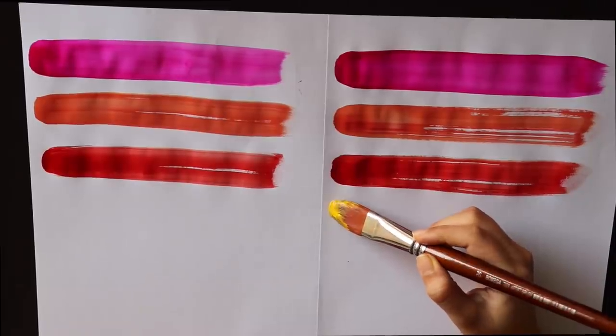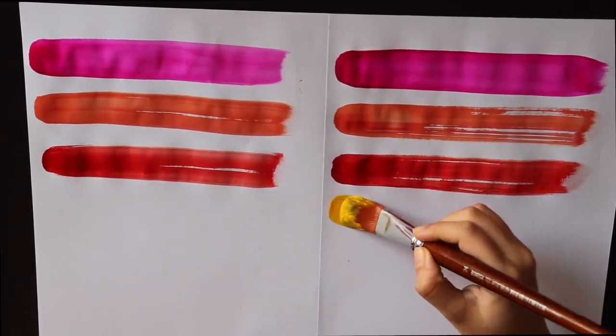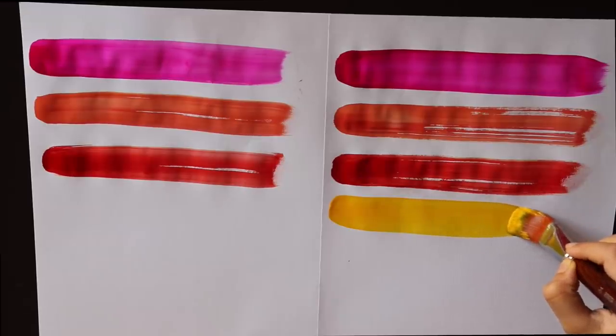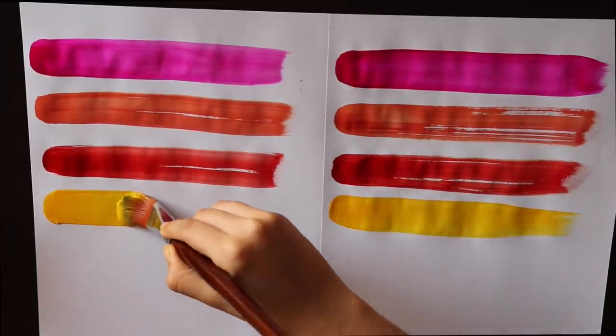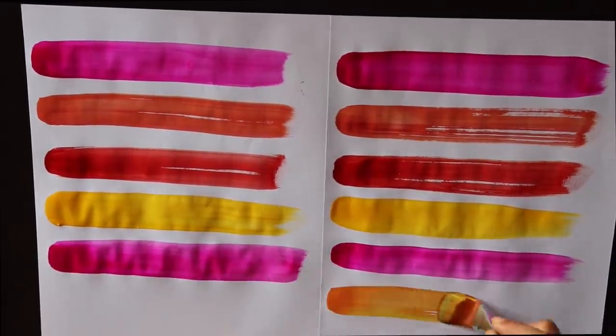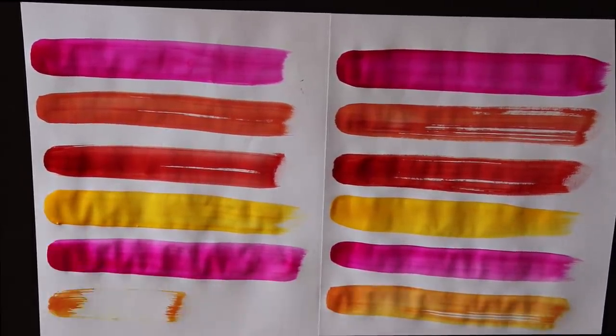So mix extremely little water to get the white spacing. If you don't like the white spacing toh aap thoda zyada paani mix kar sakti ho. And look at this yellow - the yellow is going to be the highlight of the color scheme.